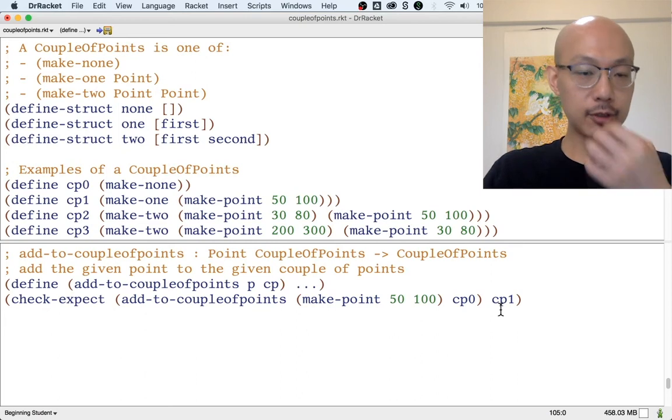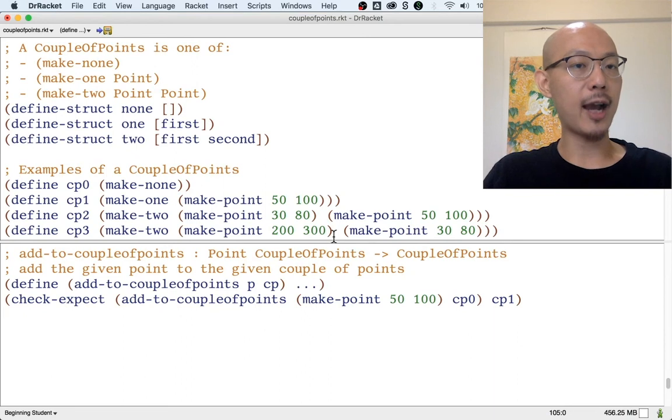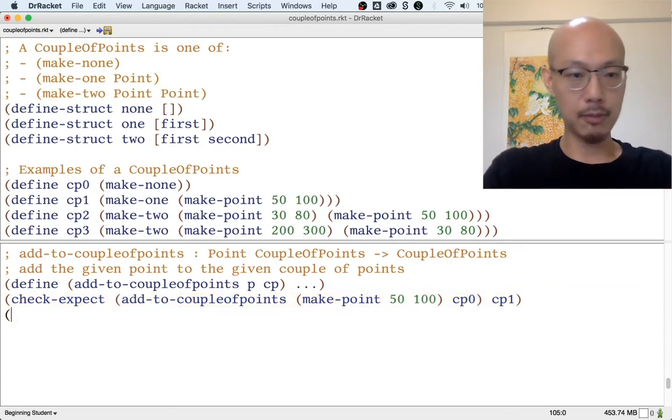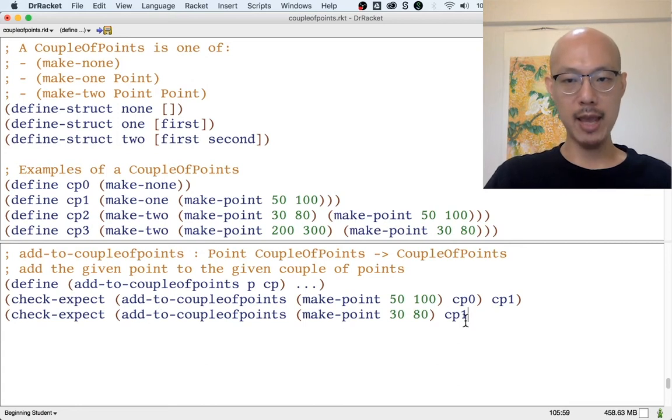Okay, so that's a good example because, again, we need to have examples for every possible kind of input, and we have three possible kinds of input, and this is the first kind of input being exemplified. Let's look at another example for a different kind of input. Instead of adding to a makeNone, let's add to a makeOne. So CP1 is a couple points that's made using makeOne. That's a different kind of input from CP0.